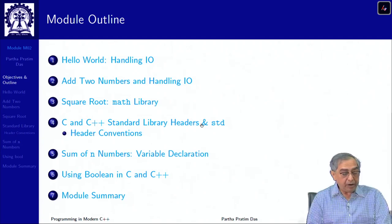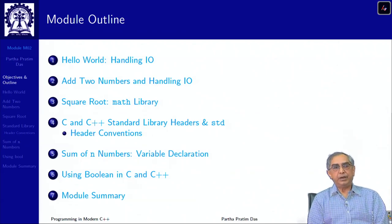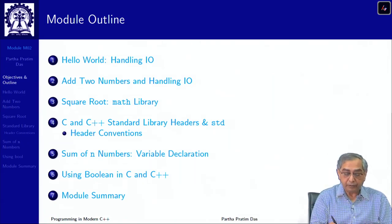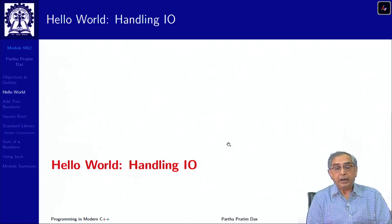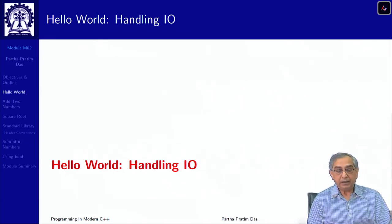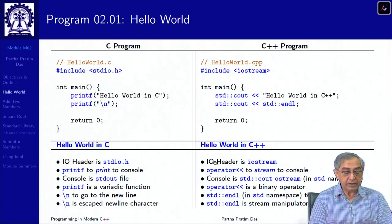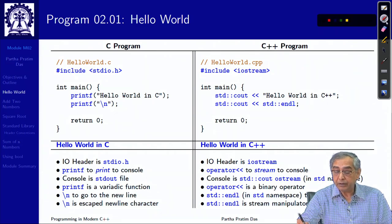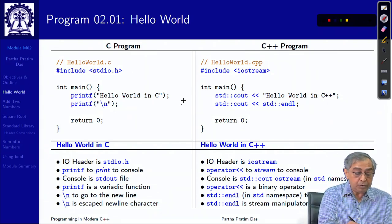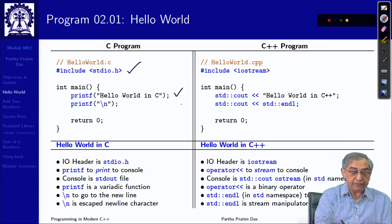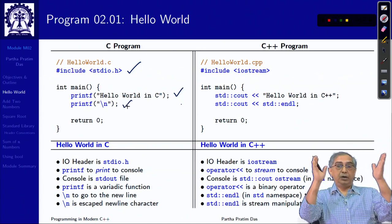There are 6 different examples — very common programs which I am sure in C you must have written all of them or at least most of them. I will use them to provide a comparison with the corresponding C++ program. The entire story starts with Hello World, which is the basic handling of IO. This is the Hello World program which all of you know. You have to include stdio.h in C and you do a printf with a newline — that is Hello World in C.